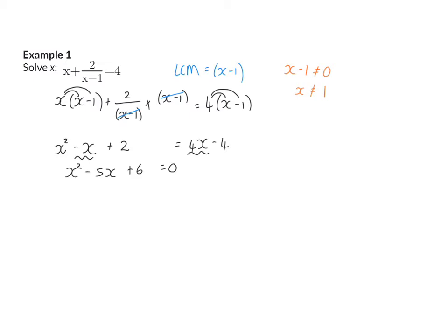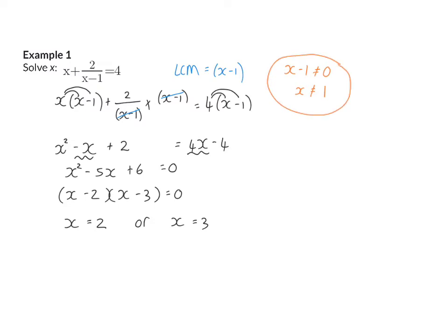Now I have a quadratic equation, so I take all the terms to one side. I can either factorize, use the quadratic formula, or complete the square. When I factorize, I get x minus 2 times x minus 3, which means x equals 2 or x equals 3. I just need to remember that x can never be 1, so both of these answers are acceptable.